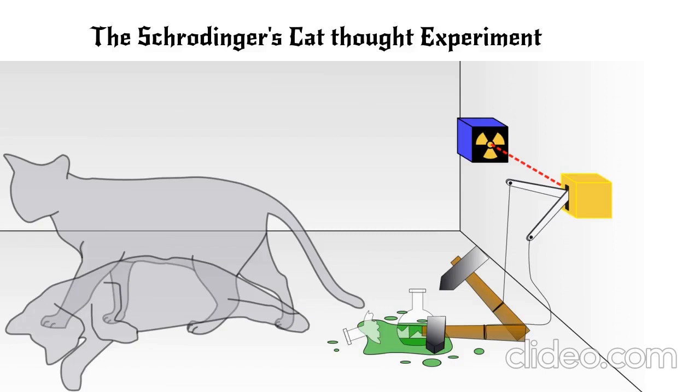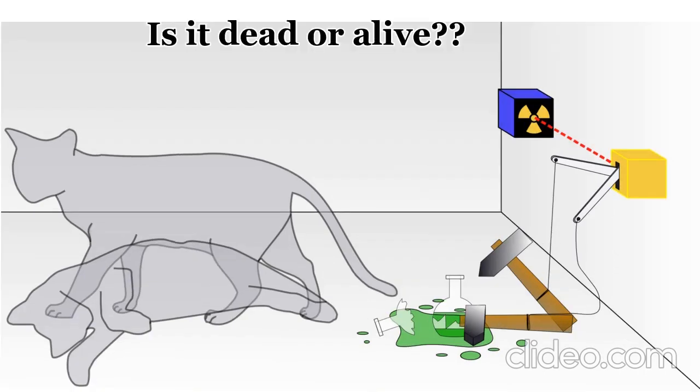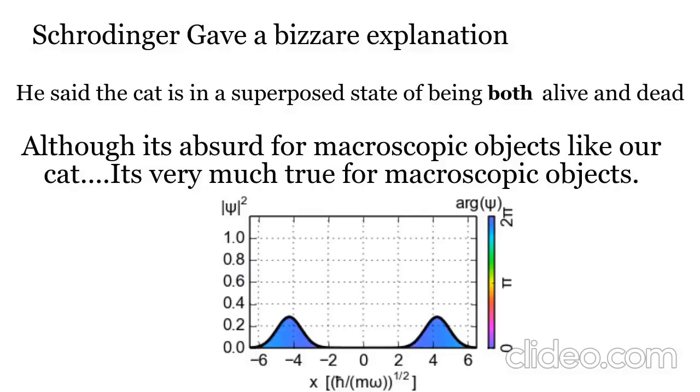The experiment with the Schrödinger's cat. Schrödinger imagined a cat being put in a box with poison which is triggered by radioactive decay. Now there are two cases possible: either the cat would be dead or alive. But Schrödinger suggested a different approach. He said that the cat would be both dead and alive at the same time until we open the box. That is, it would be in a superimposition of being alive and dead at the same time.